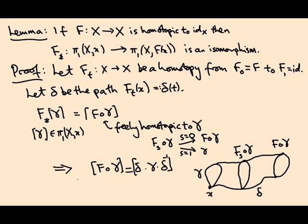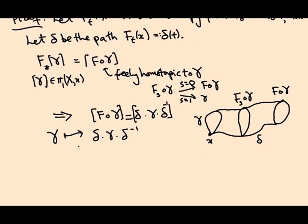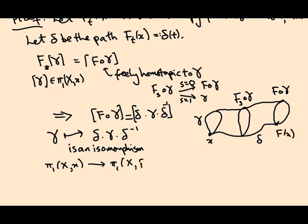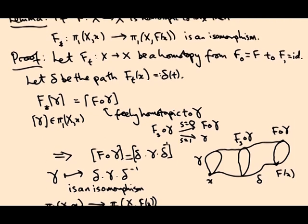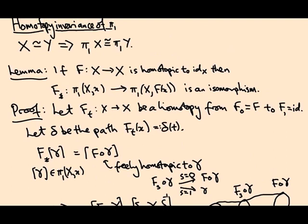The base changing map went from here to here. Now we also saw when we talked about base changing maps that this map from γ to δγδ⁻¹ is an isomorphism, in this case going from π₁(X,x) to π₁(X,f(x)). And what we're saying is that the push forward map agrees with that, so that tells us that the push forward map is an isomorphism. Which is what we wanted.